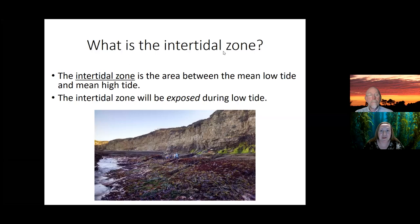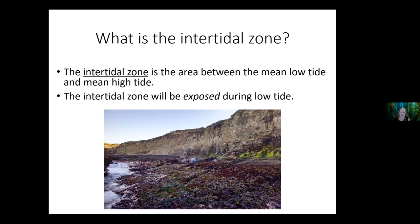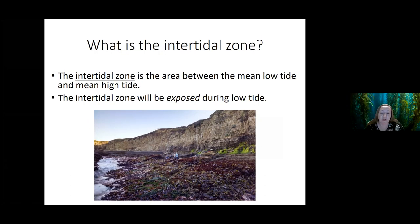The first thing I'm going to talk about is what is the intertidal zone. Most of you probably already have an idea, but to give a specific definition: the intertidal zone is the area between the mean low tide and the mean high tide — the area that's exposed during low tide. In the picture on the bottom of the screen you can see the intertidal zone below the Mendocino College Coastal Field Station in Point Arena, where our students sample once or twice a year.